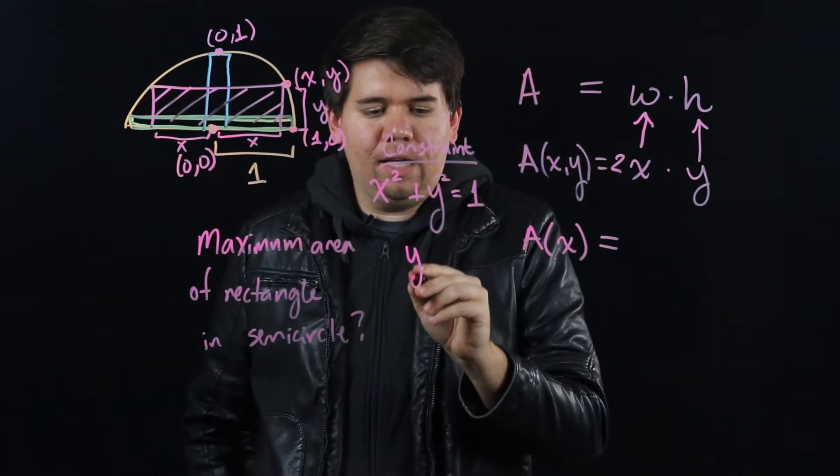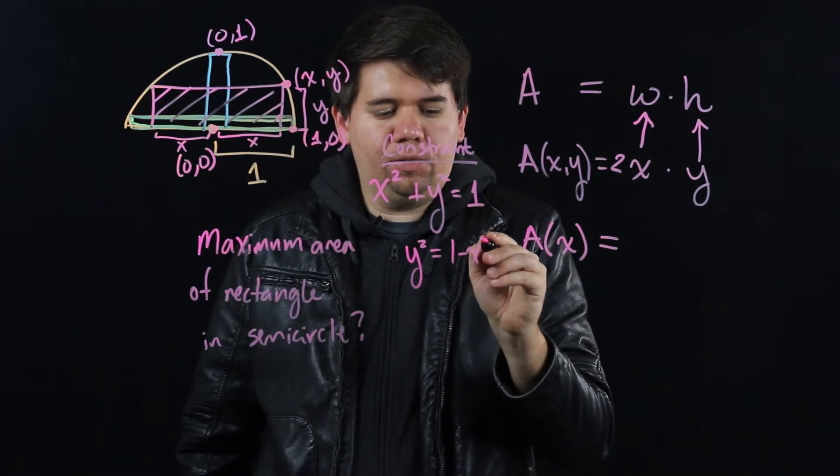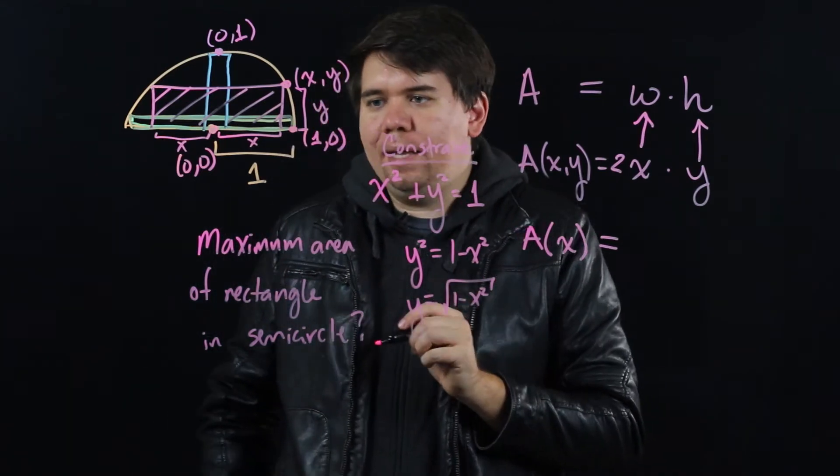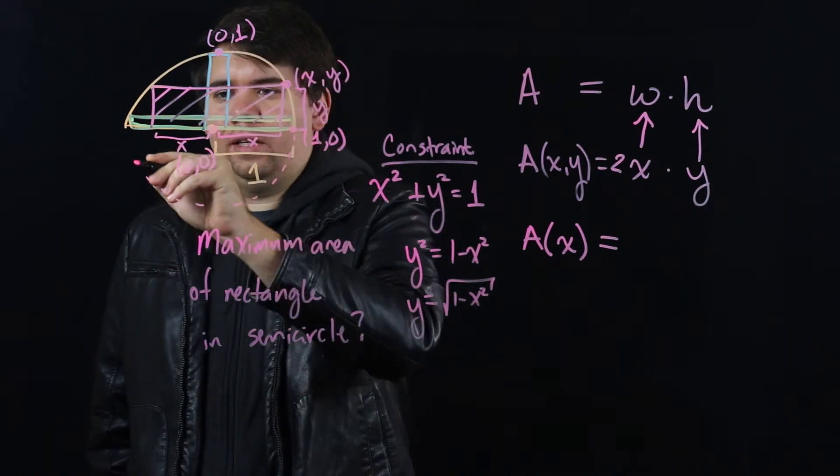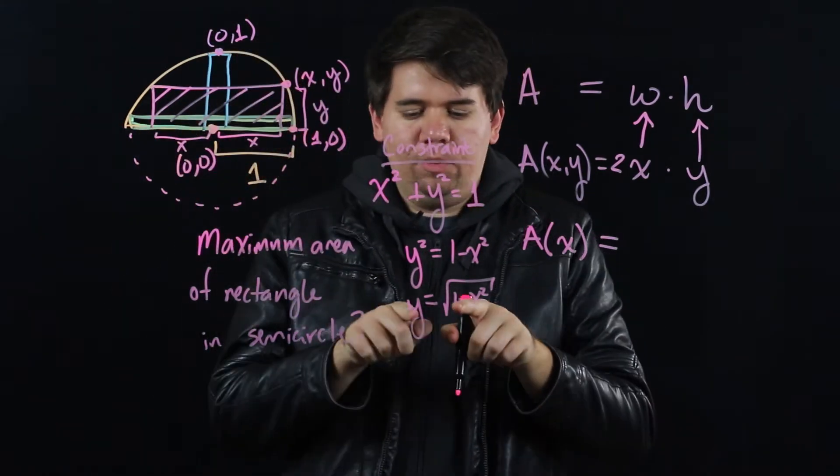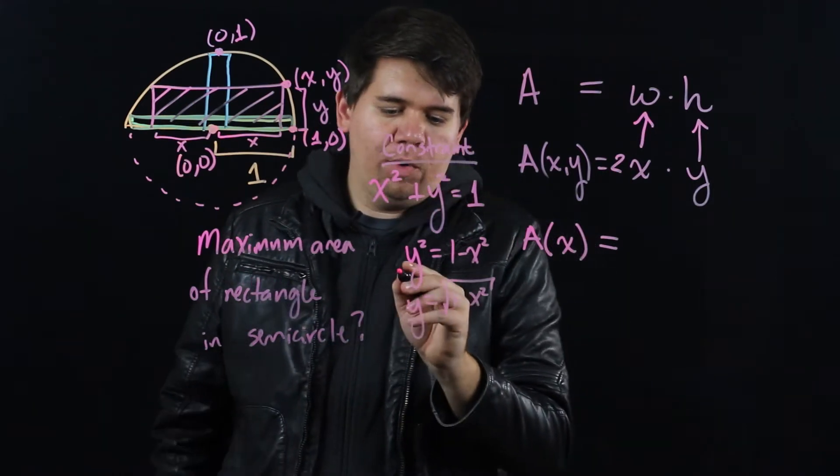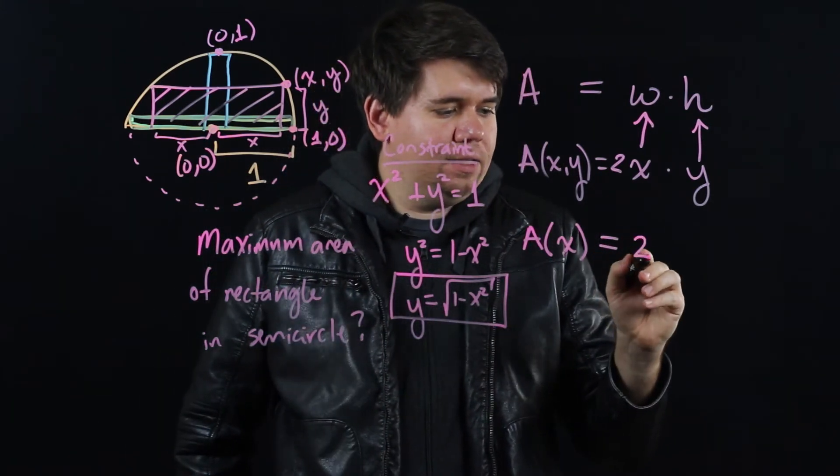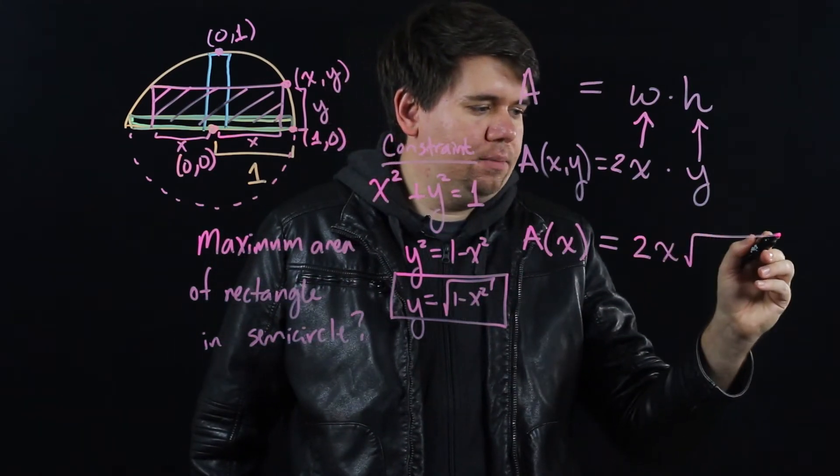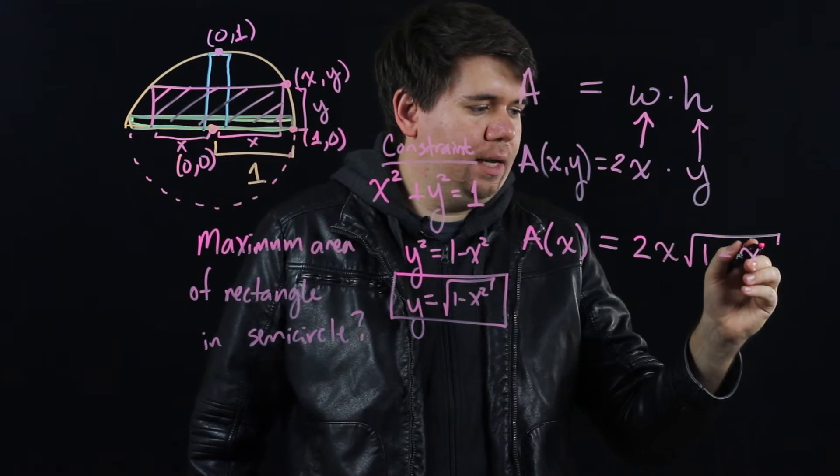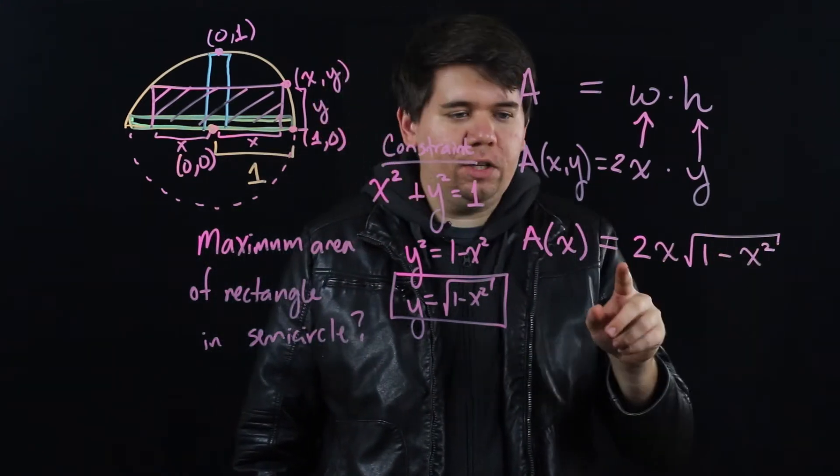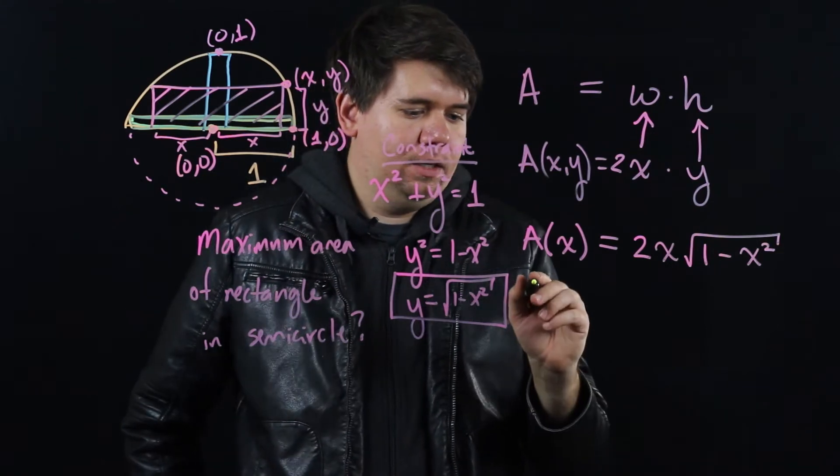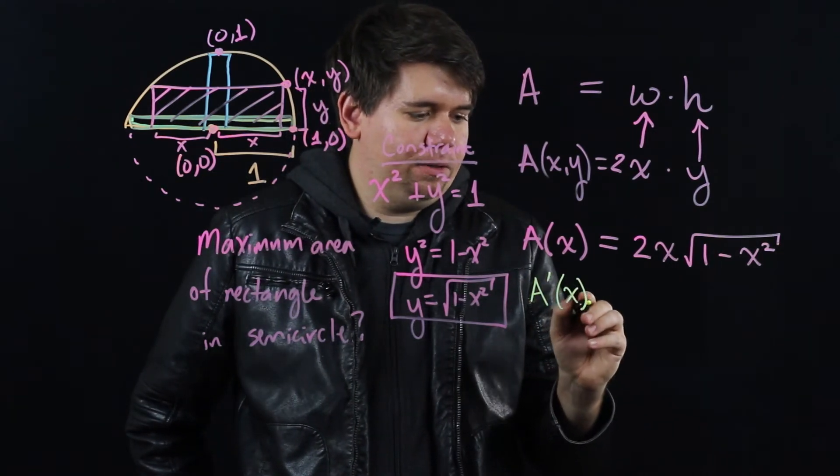That constraint allows me now to reduce to one variable. Using the constraint, I can see that my y² is just 1 - x². And hence my y is just the square root of 1 - x². For us, we're just dealing with when y is the positive square root. We can then take that value for y and plug it into the equation for our area. So now area, instead of being 2xy, is 2x times the square root of 1 - x². Notice this is a function of only one variable, and therefore we can now take the derivative of it.